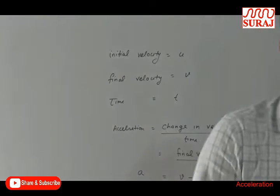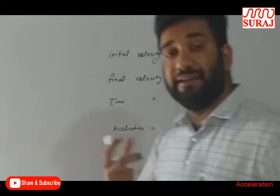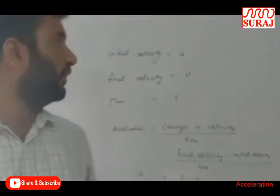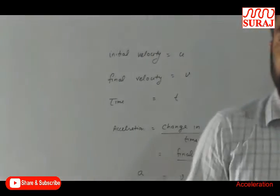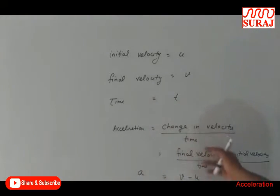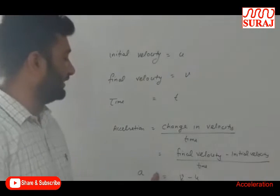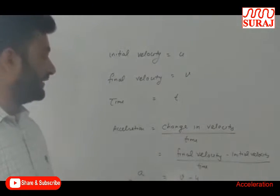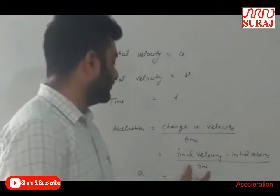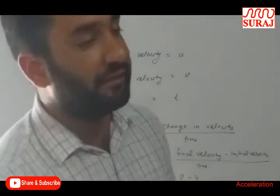Acceleration is denoted by small a. So dear students, if the initial velocity of the object is u and the final velocity is v in time t, then acceleration is given as change in velocity upon time, meaning final velocity minus initial velocity divided by time: a = (v - u) / t. This is called acceleration.